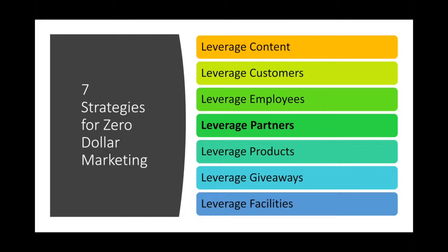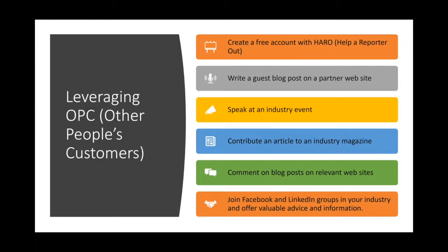The next channel or asset you can use is partners. What I love to say is use OPC — Other People's Customers — because if you don't have enough customers, there are other people or partners who have customers that you can reach out to.